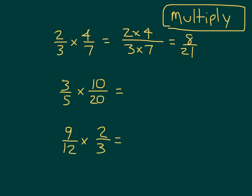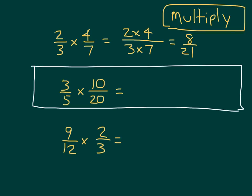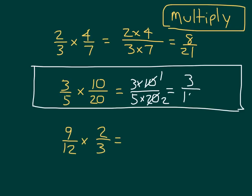Continuing with our second problem, we have three-fifths times ten-twentieths. In this case, we have three times ten over five times twenty. We can see we can cancel the ten for it to become a one, because we can divide by ten in the numerator. Twenty divided by ten is two. So we are left with three times one, which is three in the numerator, and five times two, which is ten. If we had just multiplied three times ten, we would have gotten thirty, and five times twenty is a hundred, and then we would have recognized that it was not in simplest form.